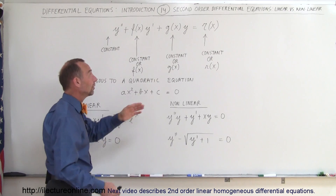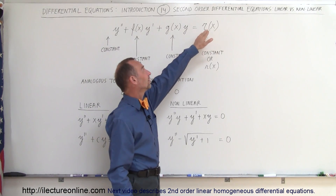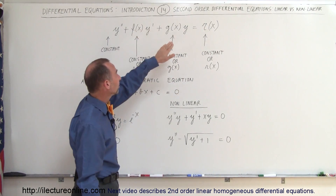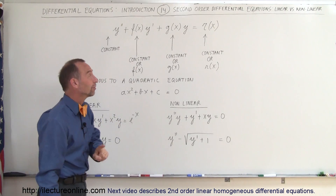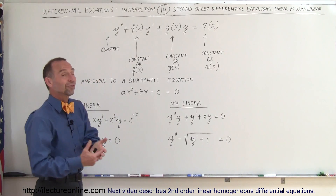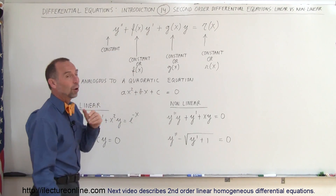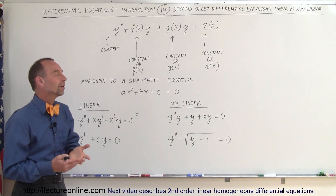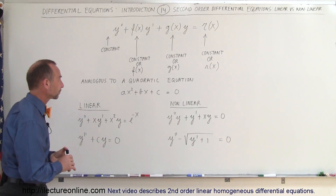We don't have to have a function of x on the right-hand side — we could have a zero, or some other missing terms. The only term that is required to have a second order differential equation is the first term: we need to have a y double prime, a second derivative of the function y.